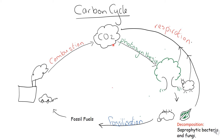Plants take up carbon dioxide via the process of photosynthesis and convert this into carbon compounds, such as glucose. The animals then eat the plants and take up the carbon compounds.